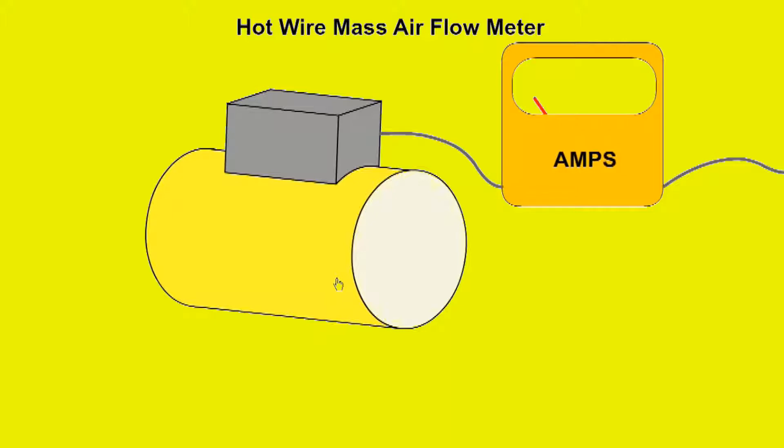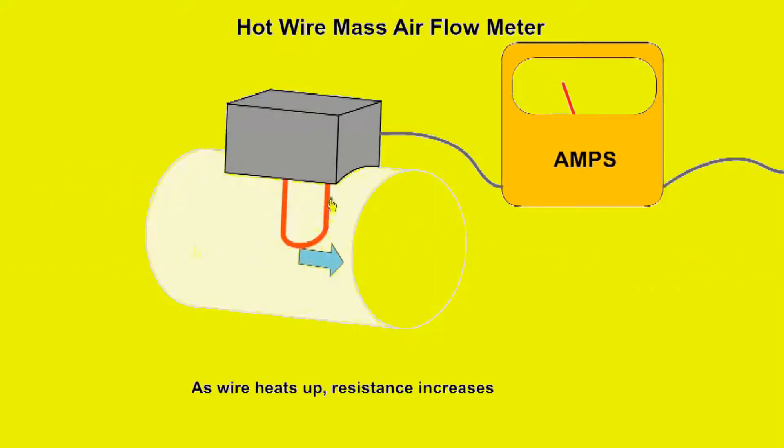The hot wire mass air flow sensor measures the flow of air into the engine. When we look inside the housing, we see an electric wire which is heated by an electric current and is retained at a constant temperature. When the engine is started, current passes through the wire and heats it up. As the wire heats, its resistance increases and it limits current flow.